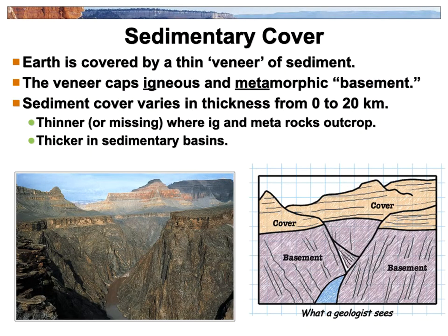Sedimentary rocks are super useful because they're almost like a layer of history on our planet. The entire surface of our planet, even the oceans, is covered by a thin layer of sediment — ground-up stuff on the surface, whether decomposed things or little bits of rock. This material, and what's turned to rock, is covering over a basement of igneous and metamorphic rocks. The oldest rock on our planet is mostly metamorphic and igneous rock.